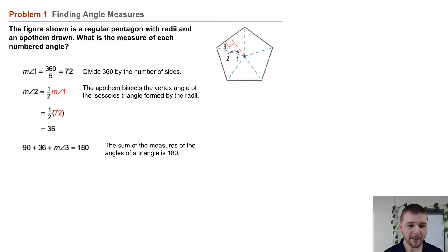Using the triangle angle sum theorem, we know that 90 plus 36 plus the measure of angle 3, our third and final unknown angle, equals 180. So we solve and find that the measure of angle 3 is 54.